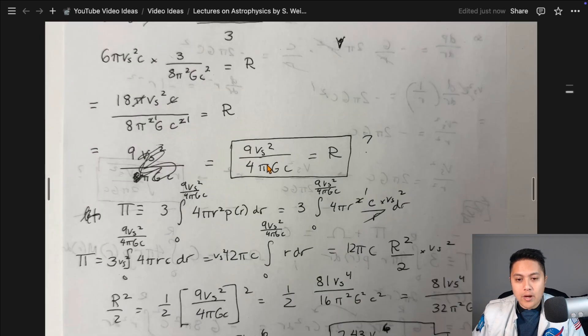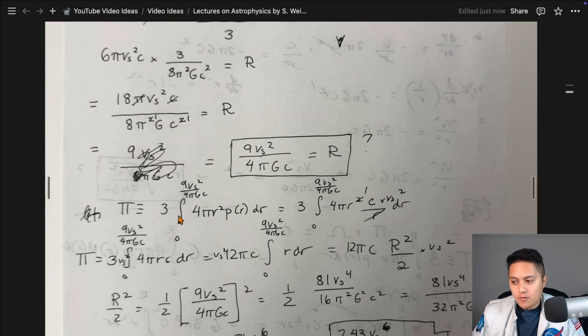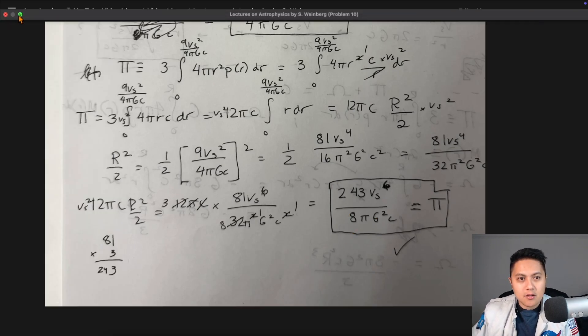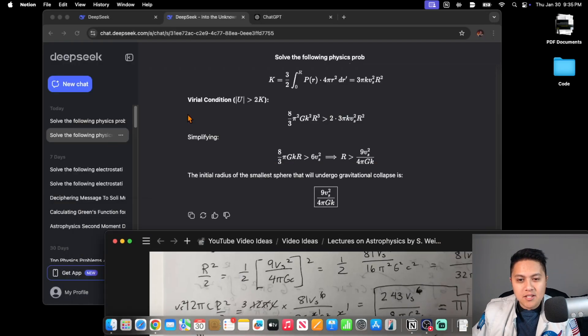And if you plug it into the thermal energy, R just being critical radius, if you plug that back into the definition for pi, you also will get the same expression. So indeed, this should be the answer that the models are getting. And let's go ahead and take a look.